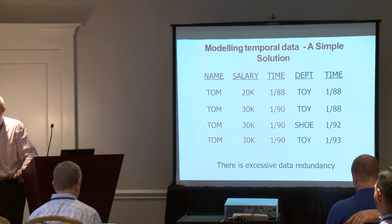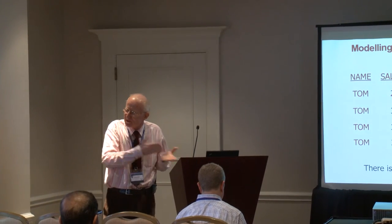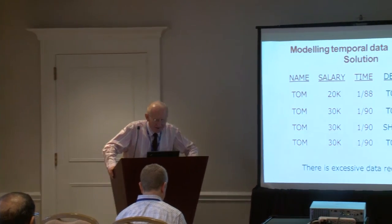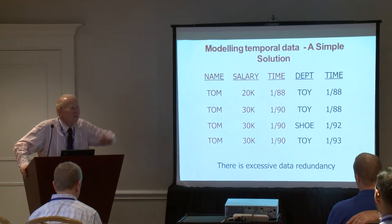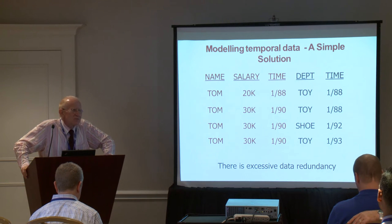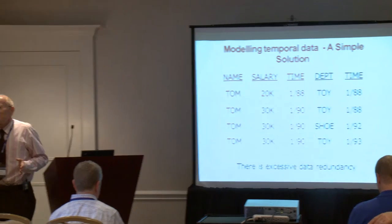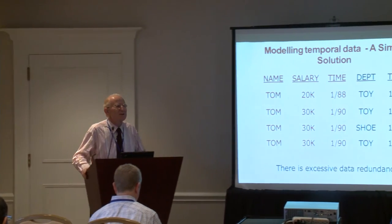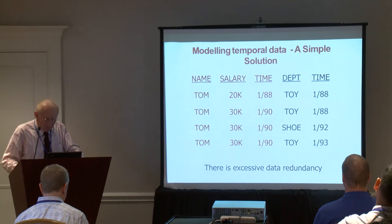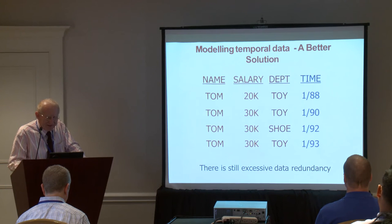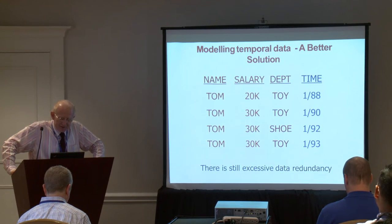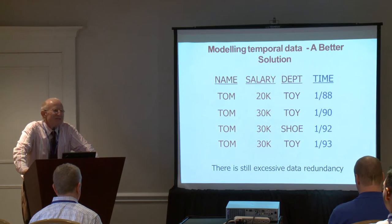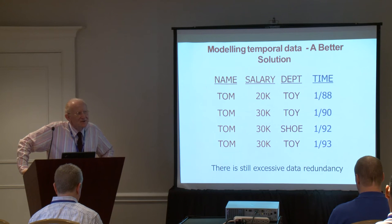How can I model temporal data — my three-dimensional cube — in the relational data model? Typically a relation has columns like name and salary. If I add a time for salary and a time for department, intuitively it should work, but it creates excessive data redundancy and querying would not be easy. We can improve it by combining the time of salary and department into one single column, which is better but still not ideal unless both attributes change at the same time.